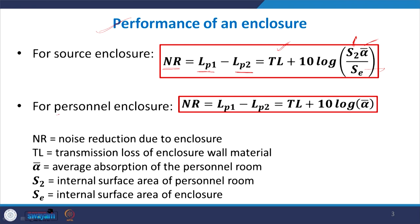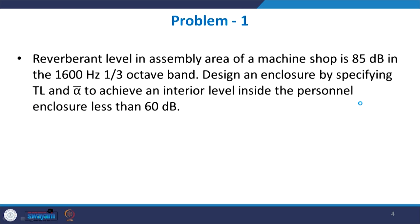In the case of a personal enclosure, both the receiving room and the incident room are the same. So the noise reduction in that case is given by the transmission loss plus 10 log of ᾱ, where ᾱ is the average absorption of the receiving room. So we have these two expressions.